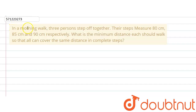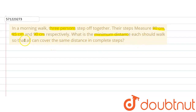The given question says that in a morning walk, three persons step off together. Their steps measure 80 cm, 85 cm and 90 cm. This is the measurement of one step of each of the persons. We are required to find out the minimum distance each should walk so that all can cover the same distance in complete steps.